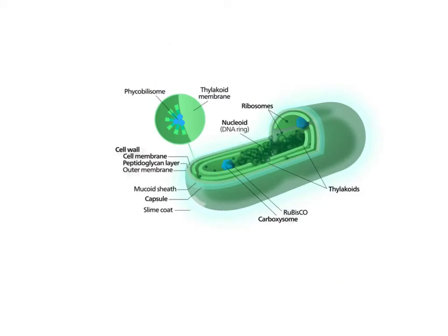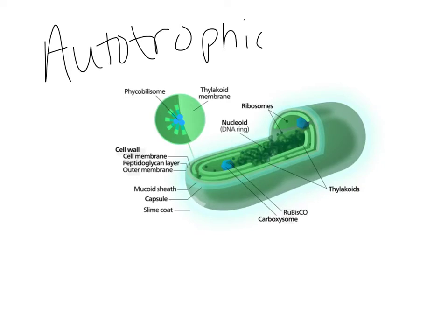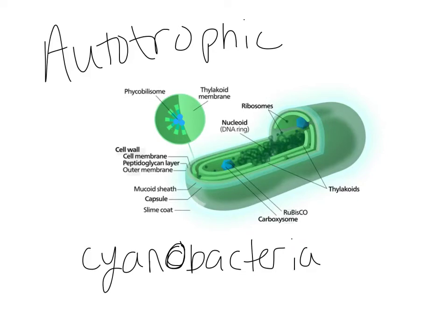Over time, some of these heterotrophic prokaryotes developed into autotrophs — autotrophic prokaryotes, similar to what's called cyanobacteria, a current bacteria that is an autotroph. Cyanobacteria is basically a photosynthetic kind of bacteria; it has thylakoids, just like a chloroplast, and membranes inside so it can create those gradients to perform photosynthesis. So in this case it's making its own food.